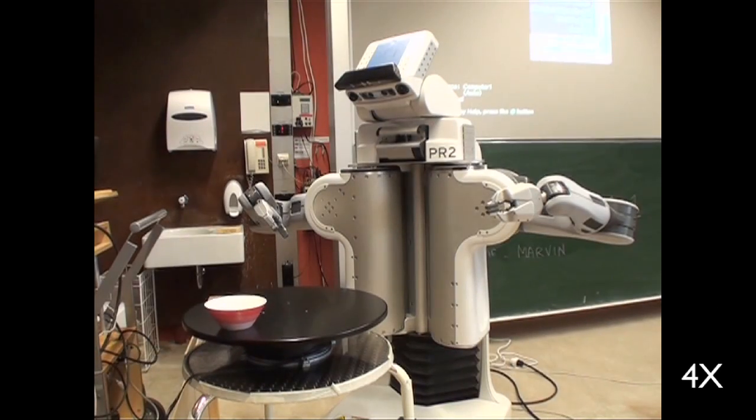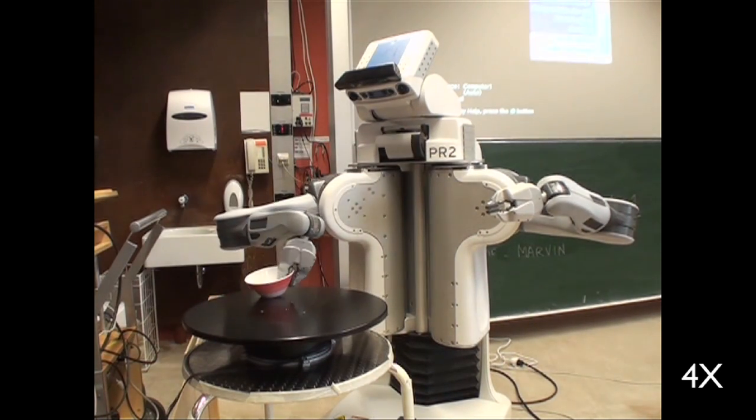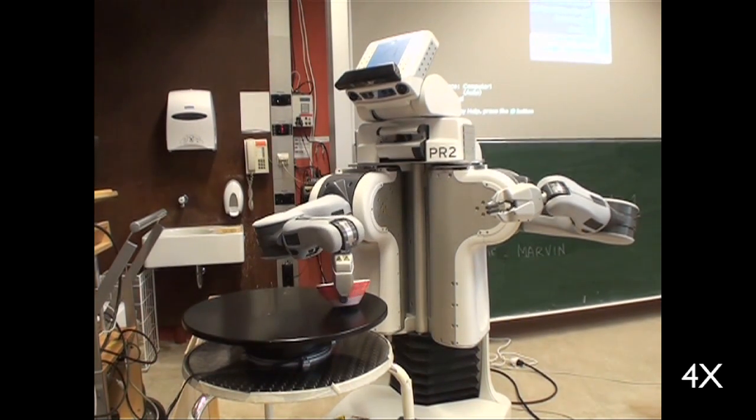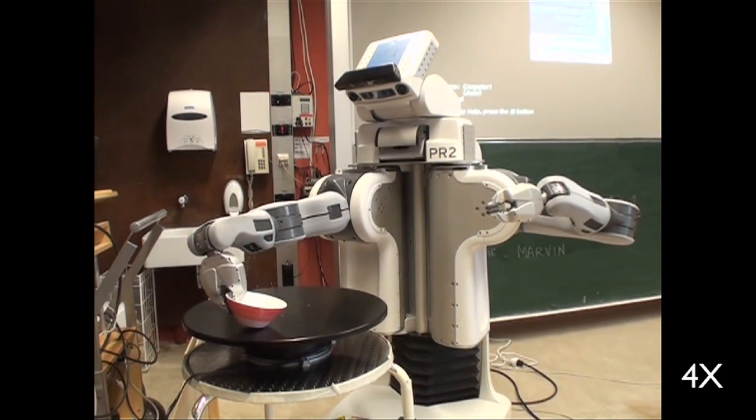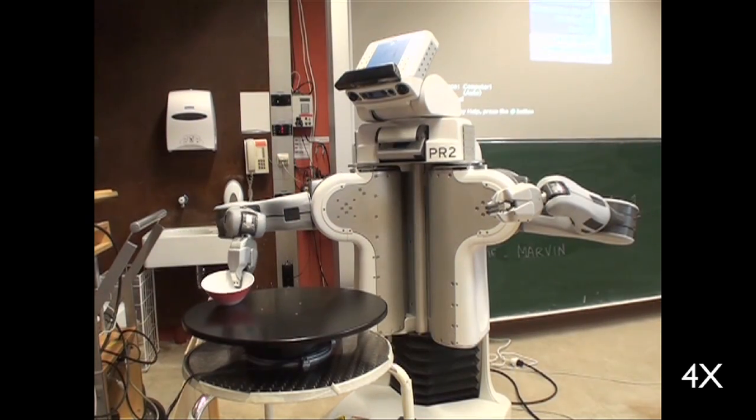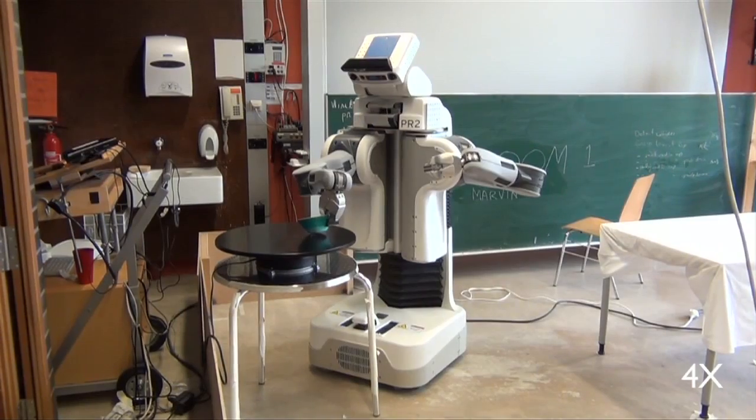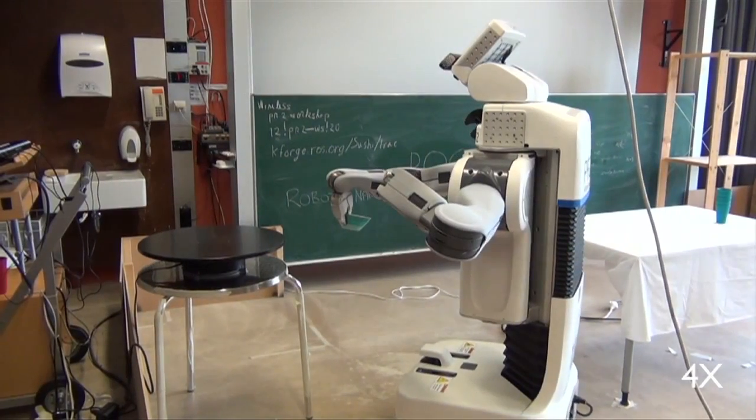One of the tasks in the sushi challenge requires the robot to pick up objects from a rotating turntable. Two teams tackled this problem using different approaches. The first team built a model of the rotation of the turntable and tracked the object with the robot's hand before picking it up.